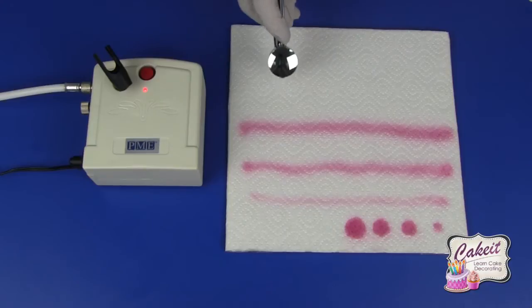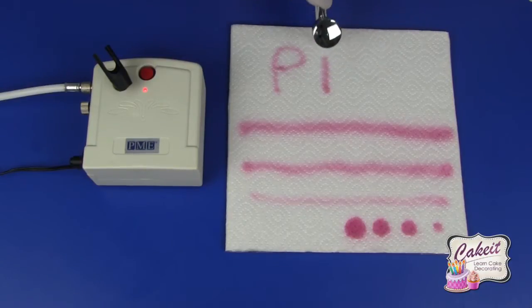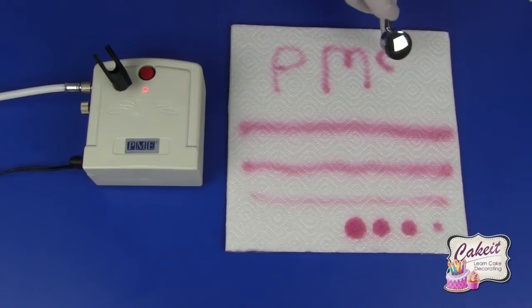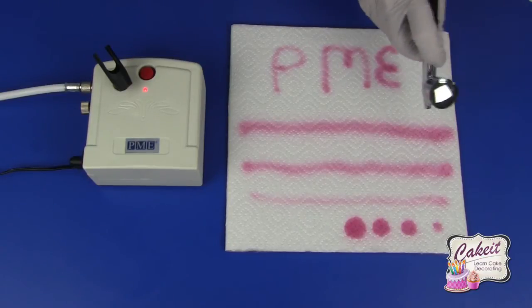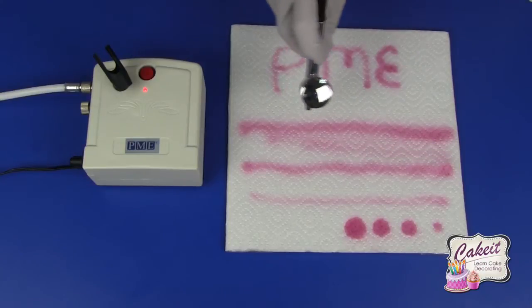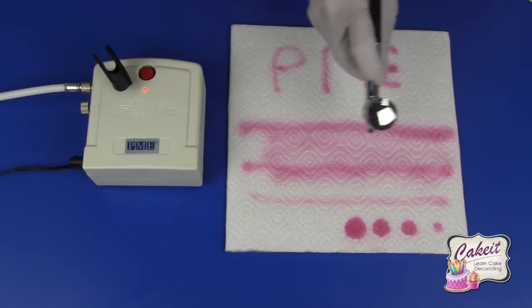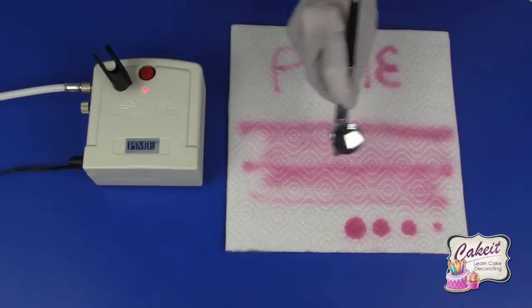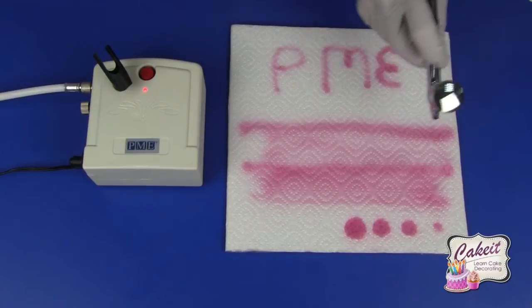I can also go in close and create lettering by doing this and a fine line. By building up using a soft line, I can infill the color just by toing and froing.